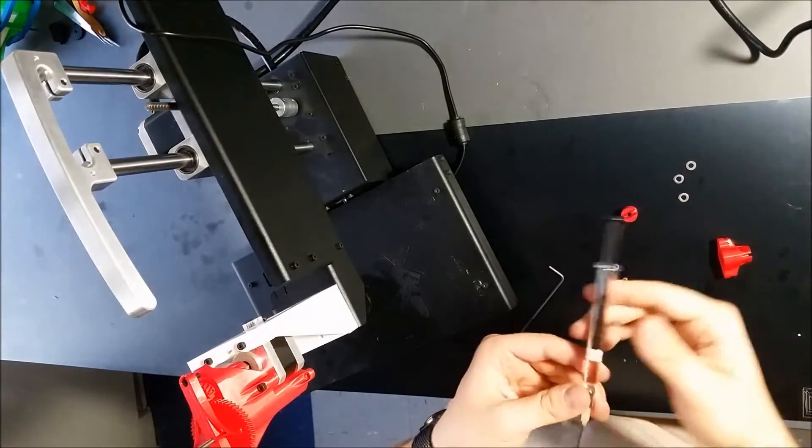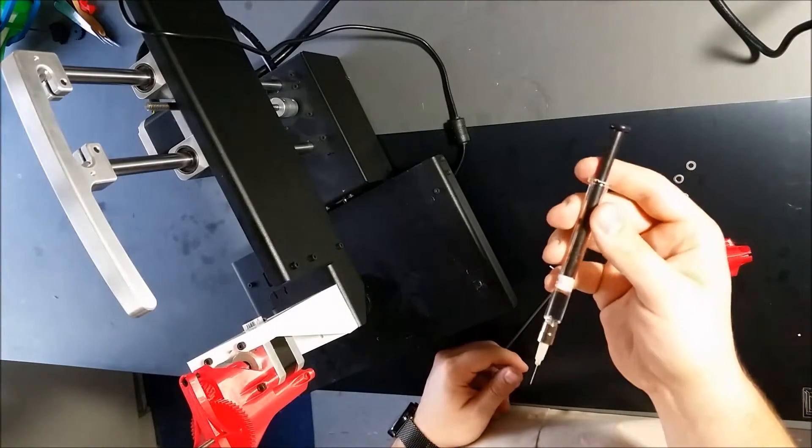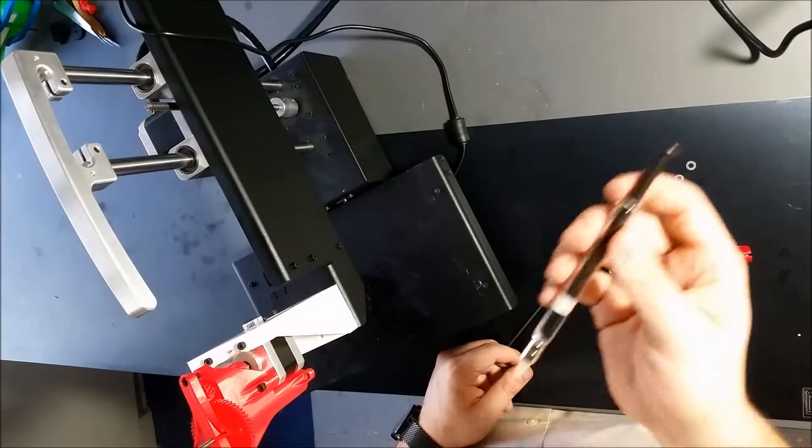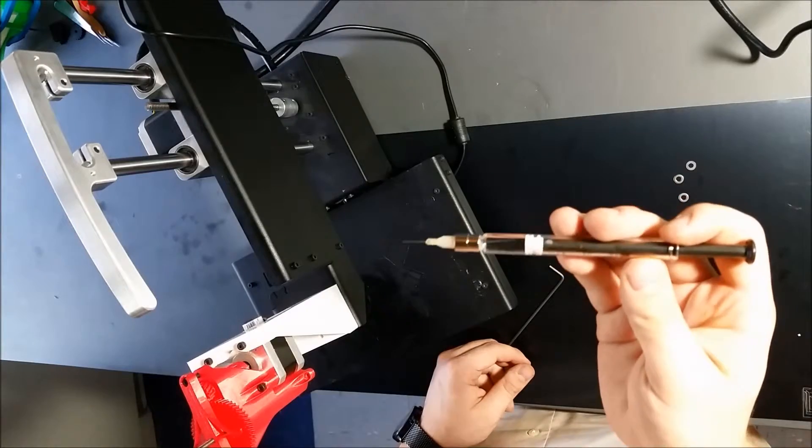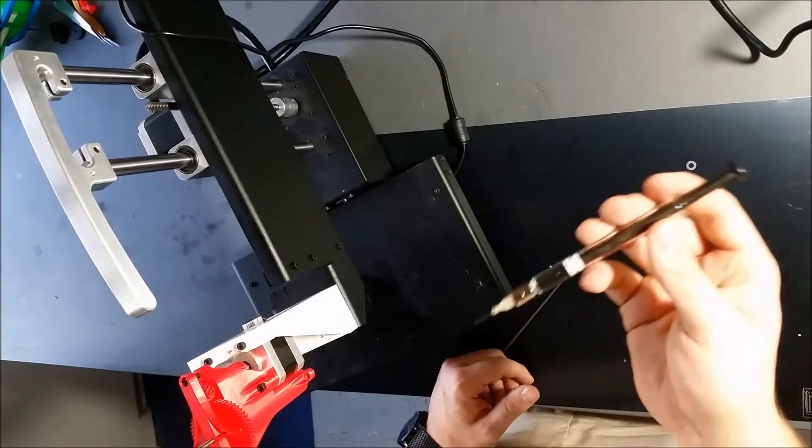So now we're going to take the 2.5ml gas tight syringe and put it in the Replostruder. We're basically going to load the Replostruder. So imagine this is about a little bit under a milliliter of collagen solution.